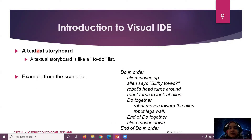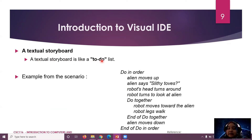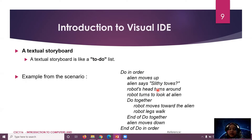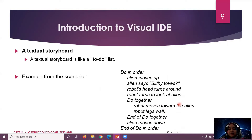A textual storyboard is like an algorithm — like pseudocode, one by one. It is like a to-do list: what needs to be done from one scene to the next. For example: 'Do in order: aliens move up, aliens say slightly, robot head turns around.' That is a textual storyboard — step by step, like a drama script where you write what each character says and does. Another example: 'Do together: robot moves toward the earlier robot.' This is example code in Alice that we will learn later.